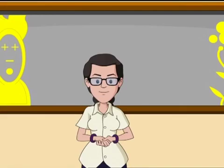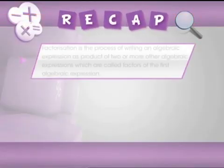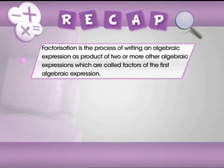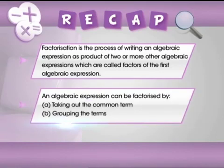Now it's time to press the action replay button so you can quickly revise all that we have learned today. Factorization is the process of writing an algebraic expression as a product of two or more other algebraic expressions, which are called factors of the first algebraic expression. An algebraic expression can be factorized by taking out the common term, or by grouping the terms.